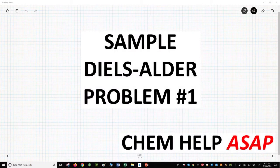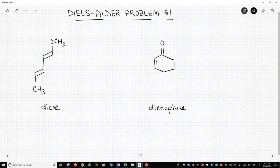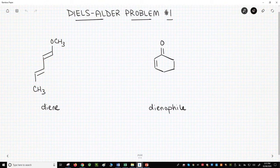Hello from ChemHelp ASAP. Let's work through a sample Diels-Alder problem from start to finish. On the screen, we have a potential Diels-Alder problem, a diene and a dienophile. Let's predict the major product.